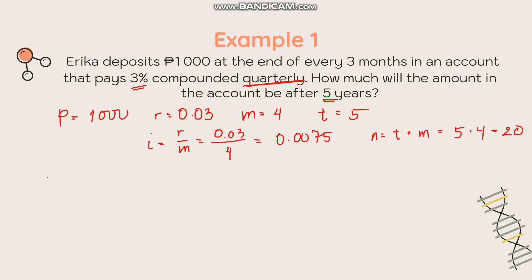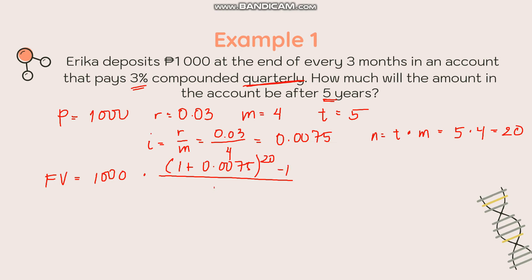Substituting into the future value formula: FV = 1,000 × [(1 + 0.0075)^20 − 1] / 0.0075. Simplifying using a calculator, the future value is 21,491.22. So after five years, Erica's account will have 21,491.22 pesos.